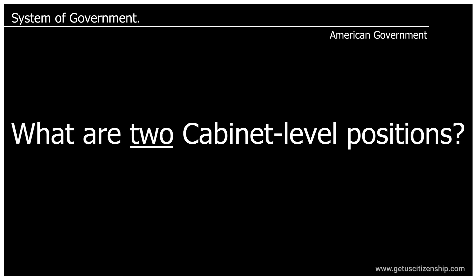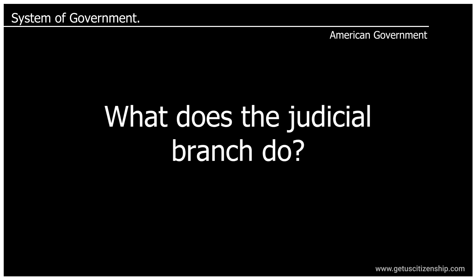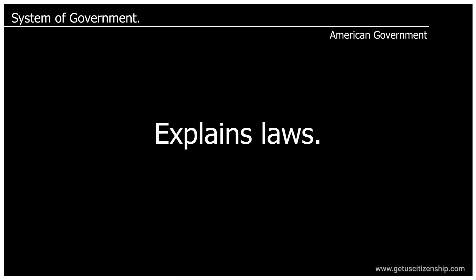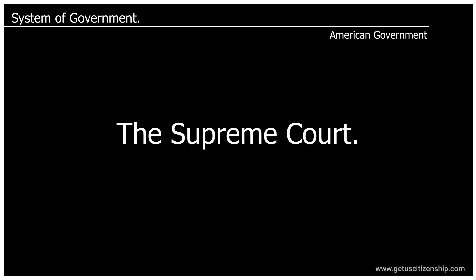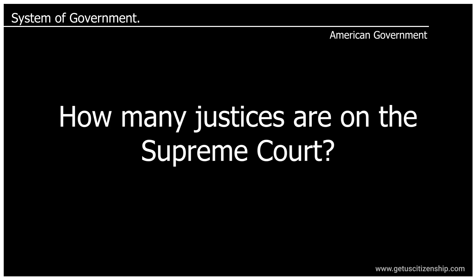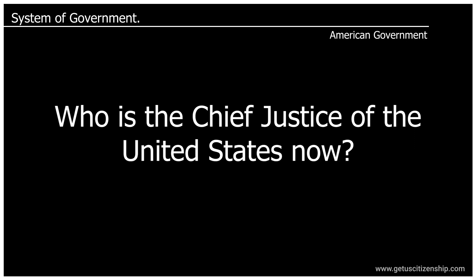What are two Cabinet-level positions? Secretary of Education and Secretary of Energy. What does the Judicial Branch do? Explains laws. What is the highest court in the United States? The Supreme Court. How many justices are on the Supreme Court? 9. Who is the Chief Justice of the United States now? John Roberts.